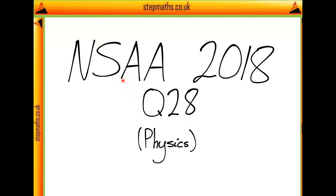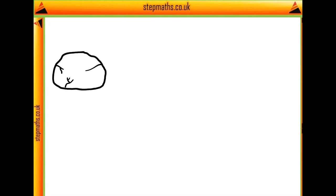Here we're going to look at question 28 from the NSAA 2018 paper. In this question we're told we have a rock accelerating downwards.